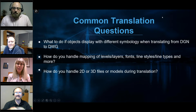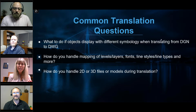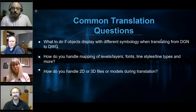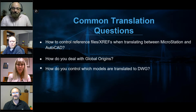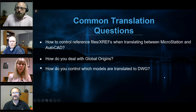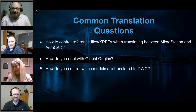These are some of the questions that will be addressed during this webcast: What do you do if objects display with different symbology when translating from DGN to DWG? How do you handle the mapping of levels, layers, fonts, line styles, and line types? How do you handle 2D or 3D files during translation? What happens with XRefs or reference files? What about global origins? And how do you control which models are translated to your AutoCAD drawing file?